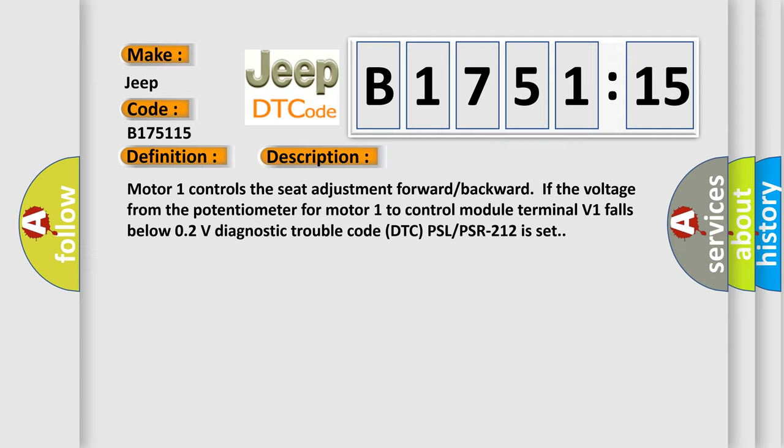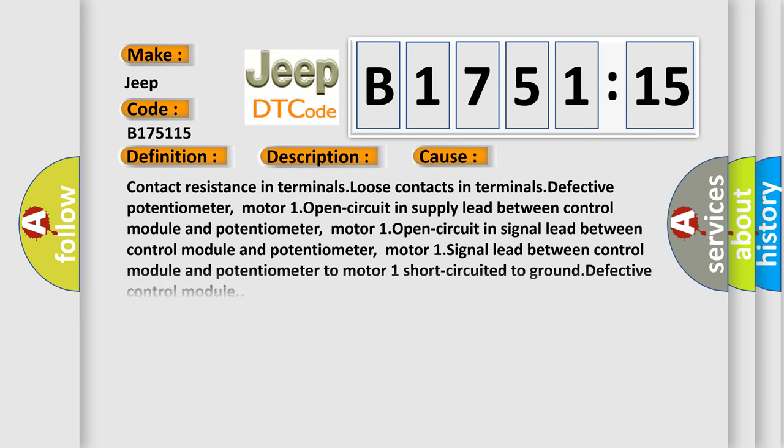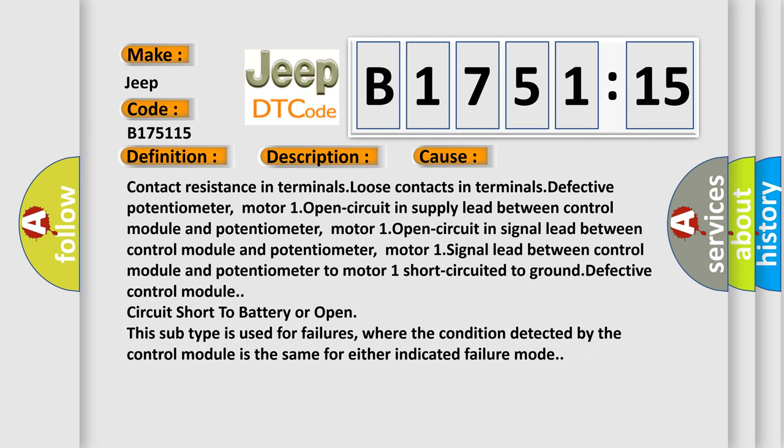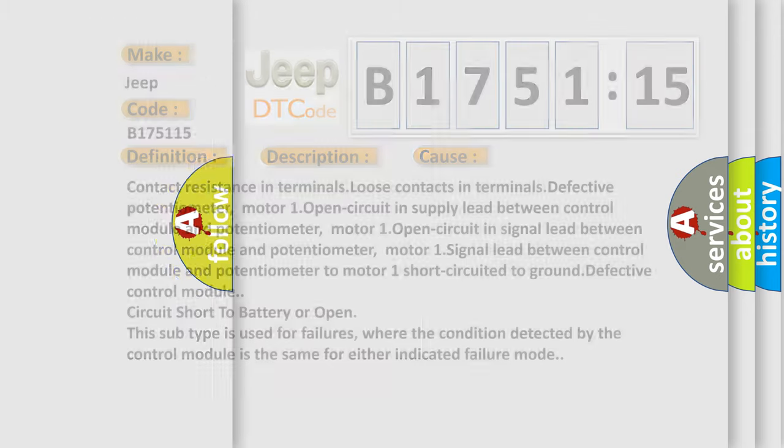This diagnostic error occurs most often in these cases: contact resistance in terminals, loose contacts in terminals, defective potentiometer motor 1, open circuit in supply lead between control module and potentiometer motor 1, open circuit in signal lead between control module and potentiometer motor 1, signal lead between control module and potentiometer to motor 1 short circuited to ground, defective control module, circuit short to battery or open. This subtype is used for failures where the condition detected by the control module is the same for either indicated failure mode.